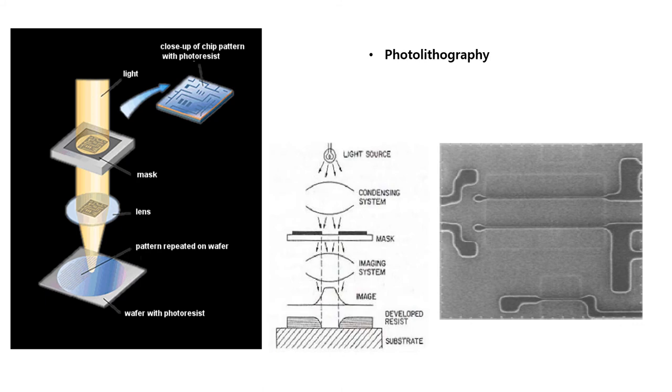Integrated circuits have two main advantages over discrete circuits: cost and performance. Cost is low because the chips with all their components are printed as a unit by photolithography, rather than being constructed one transistor at a time. Furthermore, packaged integrated circuits use much less material than discrete circuits. Performance is high because the integrated circuit's components switch quickly and consume little power compared to their discrete counterparts, as a result of the small size and close proximity of the components. Here in this picture is shown the process of photolithography, the steps involving masking and patterning. We shall see some more details in the next lecture.